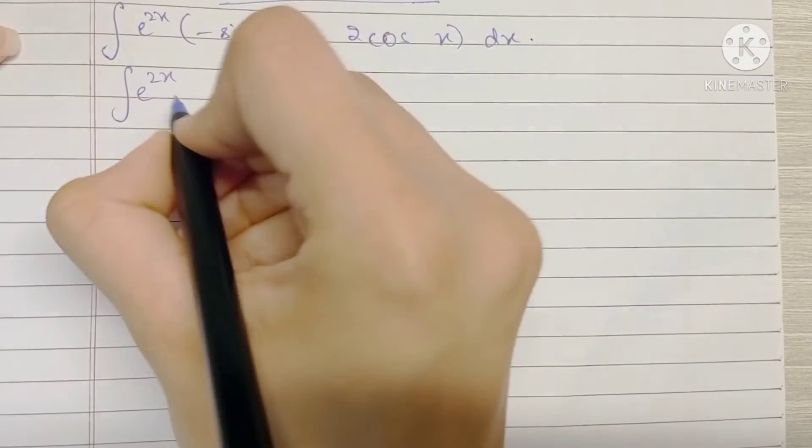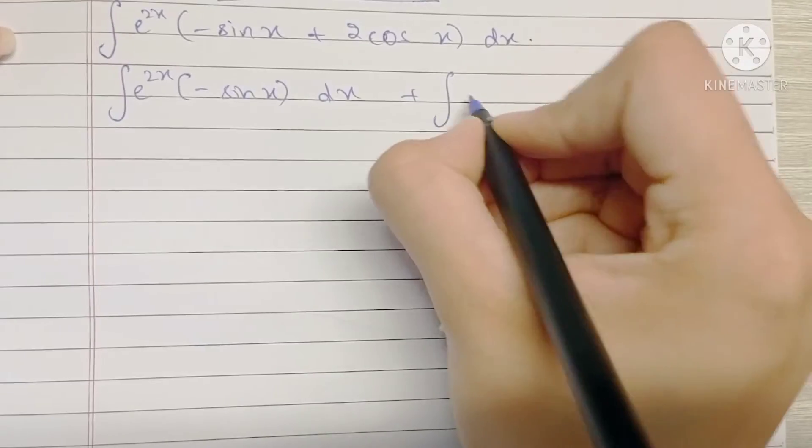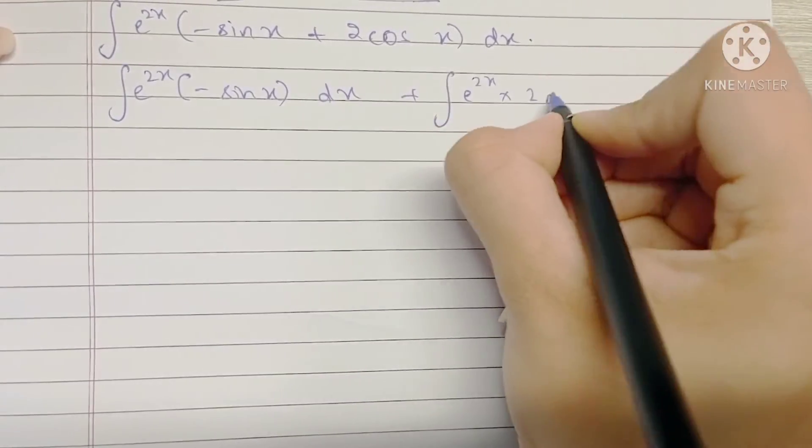So we have the integral of e raised to 2x into minus sin x plus the integral of e raised to 2x into 2 cos x.